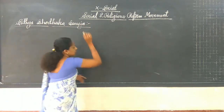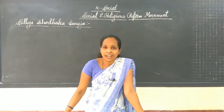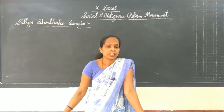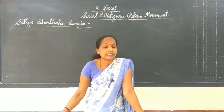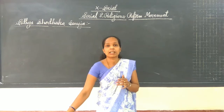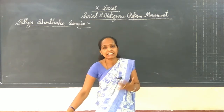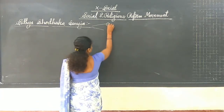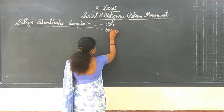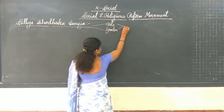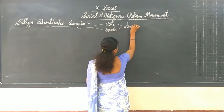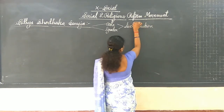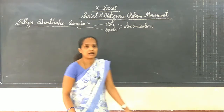Satya Shodak Samaj. You know that there was widespread upper caste and gender discrimination that prevailed in Maharashtra. Even as it was a practice in other parts of India, like that, even in Maharashtra also it was spreading more and more. Caste and gender discrimination was prevailing in Maharashtra.